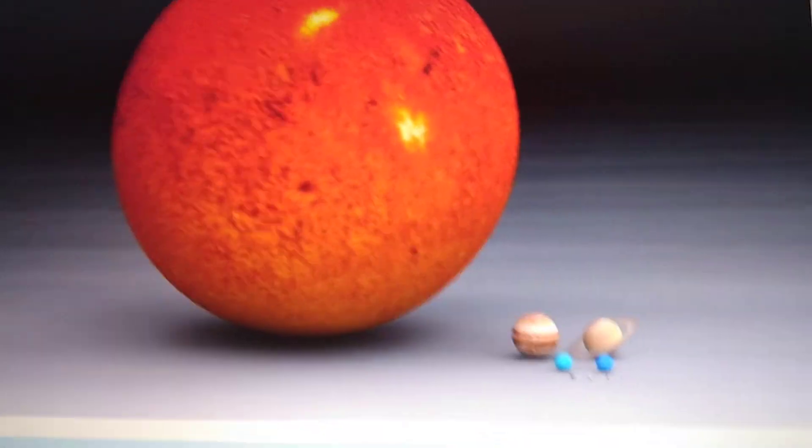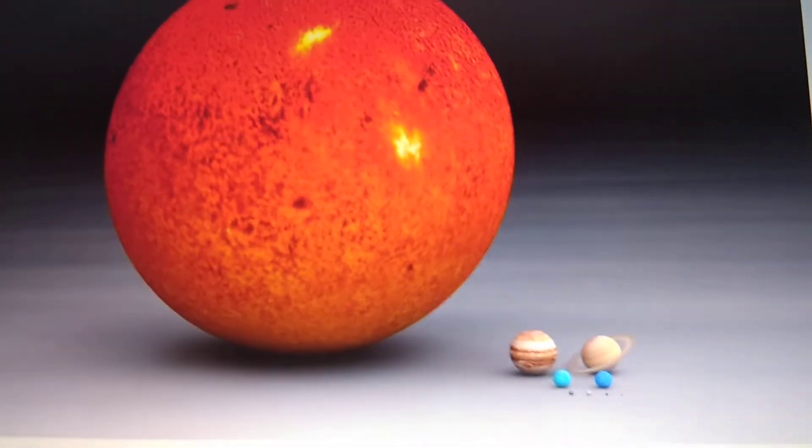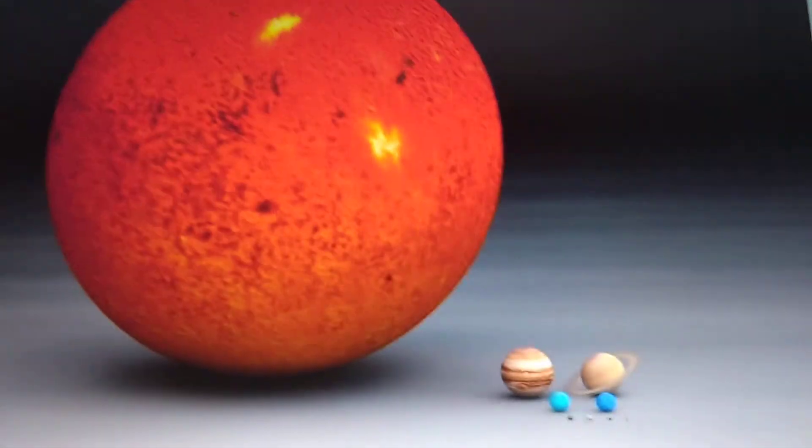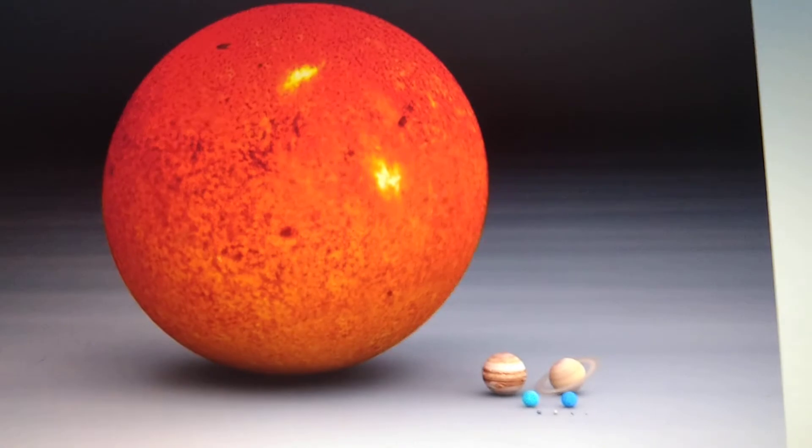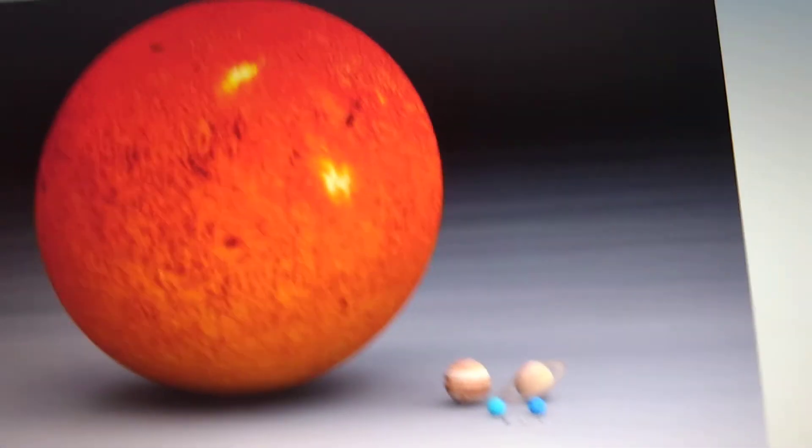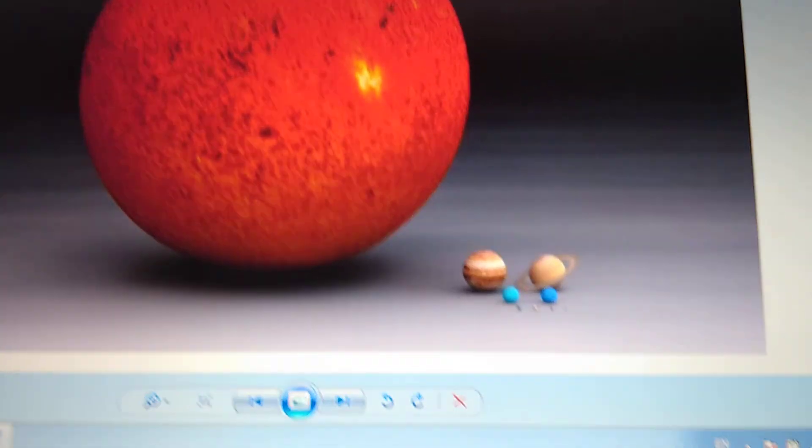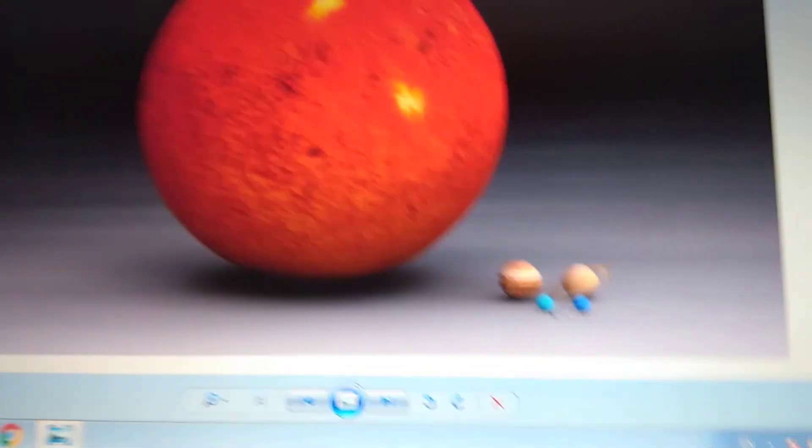Hey guys, welcome back to my channel. Today I'm gonna do the comparison in our solar system, so let's get started. Now Mercury - Mercury is the smallest planet in the solar system with 2439 kilometers.